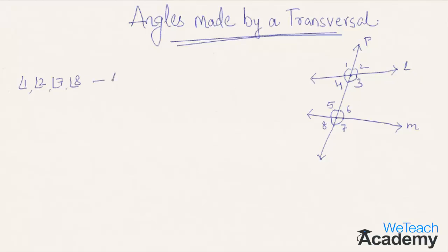If you observe, angle 3, angle 4, angle 6, and angle 5 lie inside l and m, hence they are called interior angles.